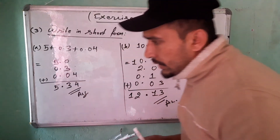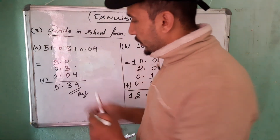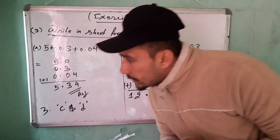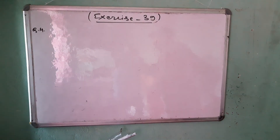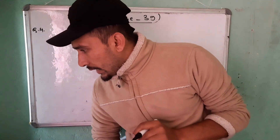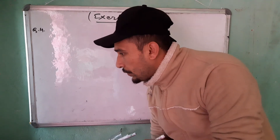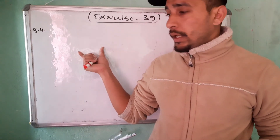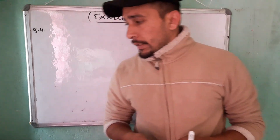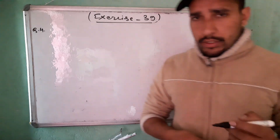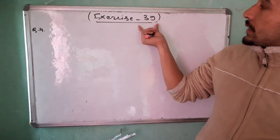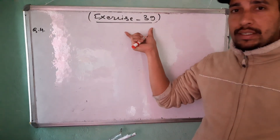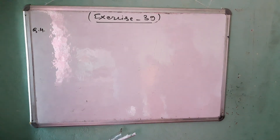Question number 3, parts C and D, are your home task. Now let's move on to question number 4: write in place value chart and find the place value of the colored digits. We have already done place value charts in previous classes, so try question number 4 on your own. This was today's class. We will continue the remaining questions in the next class. Exercise 39 is over — it had four questions. In the next class, we will do Exercise 40. Thank you.